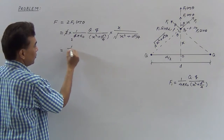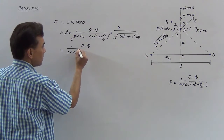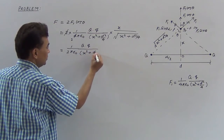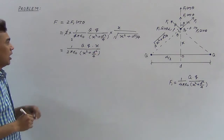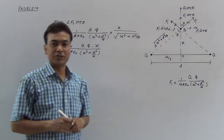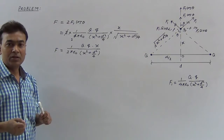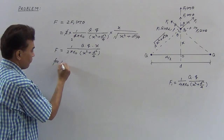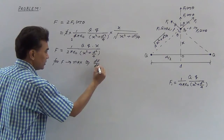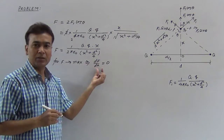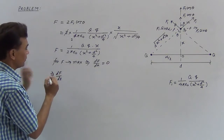Combining: net force F = (1/4πε₀) × 2Qq × x divided by (x² + d²/4)^(3/2). This force is a function of x only. For maximum force, we set dF/dx equal to 0.